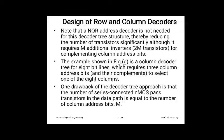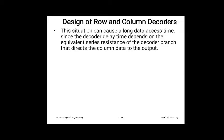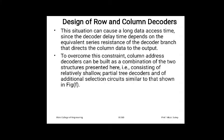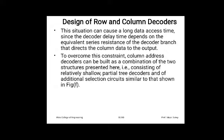One drawback of the decoder tree approach is that the number of series-connected NMOS pass transistors in the data path equals the number of column address bits. This can cause a long data access time, since the decoder delay depends on the equivalent series resistance of the decoder branch that directs column data to the output. To overcome this, the column address decoder can be built as a combination of a relatively shallow partial tree decoder and an additional selection circuit.